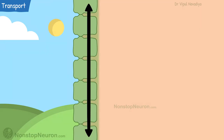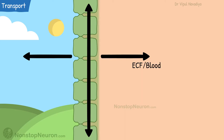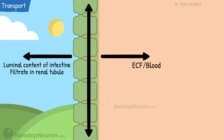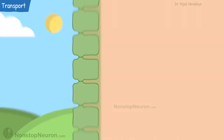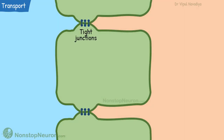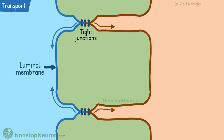First, the epithelial cells make a continuous sheet. This sheet separates two distinct solutions. Inside we have extracellular fluid, or in a broad sense, blood. And outside we have content that is in continuation with the outside world — for example, luminal content of the intestine or filtrate in the case of renal tubules. The cells in the sheet are connected by tight junctions, which separate two sets of cell membrane. The side of the cell facing the lumen is called the luminal or apical membrane, and the side facing inside is called the basolateral membrane.